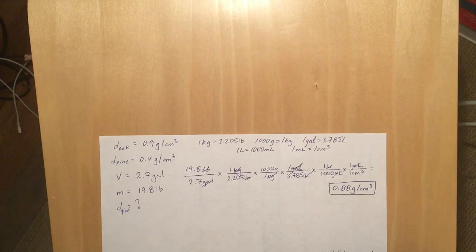If the physical property of density is essentially equivalent to the known physical property of a particular piece of wood, in this case oak if it's around 0.9 grams per cubic centimeter and pine if it's around 0.4 grams per cubic centimeter, then you can identify what piece of wood you have.